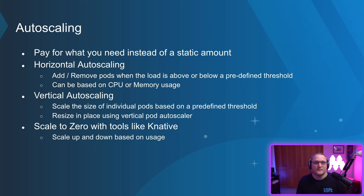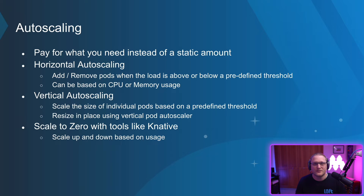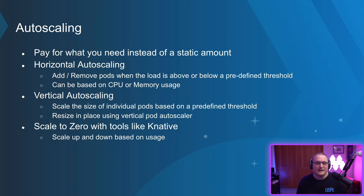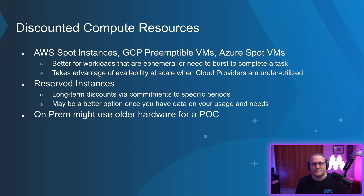Auto scaling lets you pay for what you need instead of a static amount. Horizontal auto scaling is great because you can add or remove pods when the load is above or below a predefined threshold, based on CPU or memory. Vertical auto scaling is awesome too, because you can scale the size of individual pods based on predefined thresholds, and you can resize in place using the Vertical Pod Autoscaler. Other tools like Knative can be used to scale to zero — so if you're not getting any requests for your application, why run it? Scale it to zero, and when a request comes in it will spin up and serve traffic to that pod.